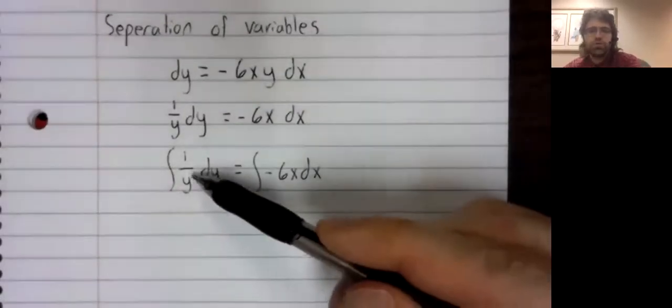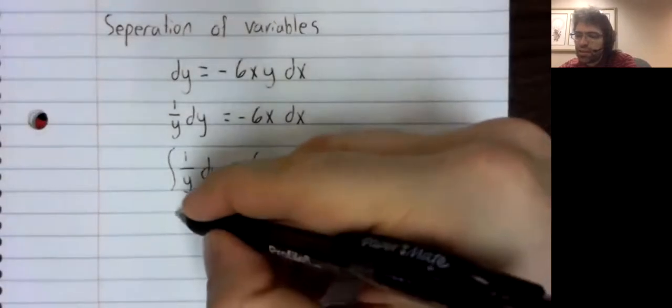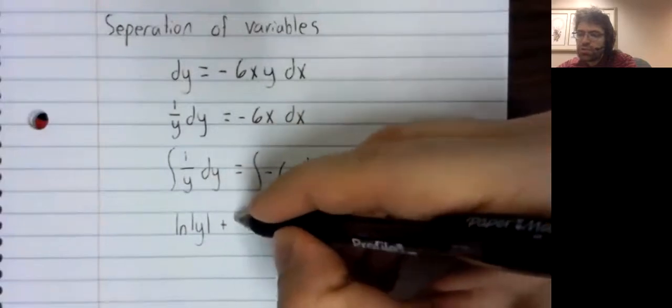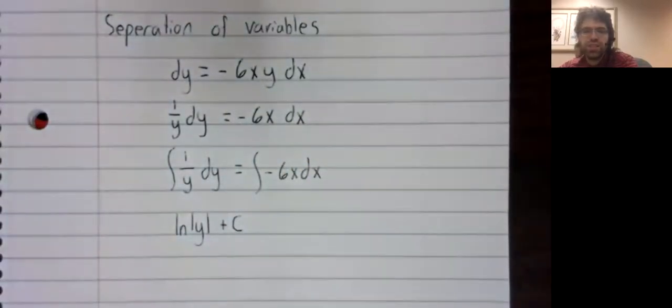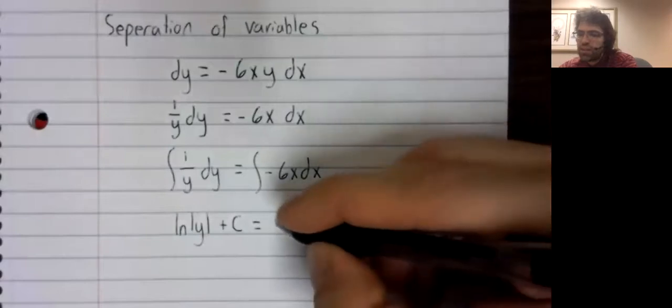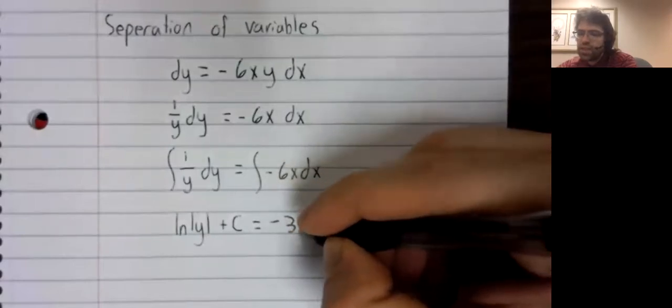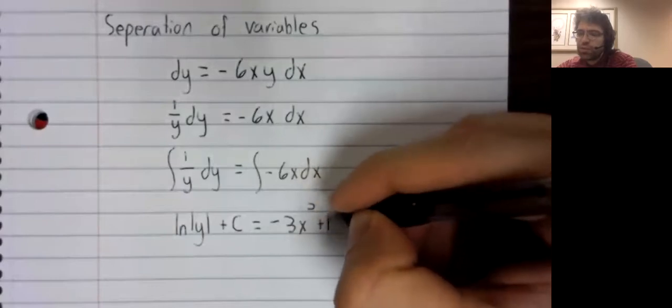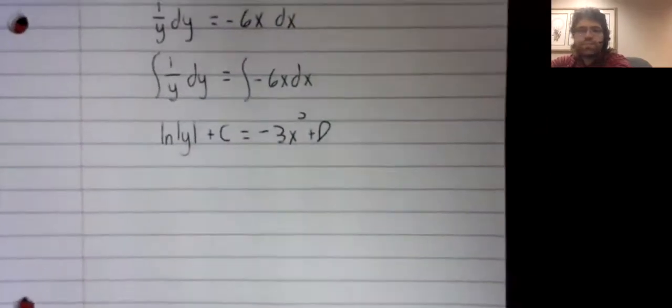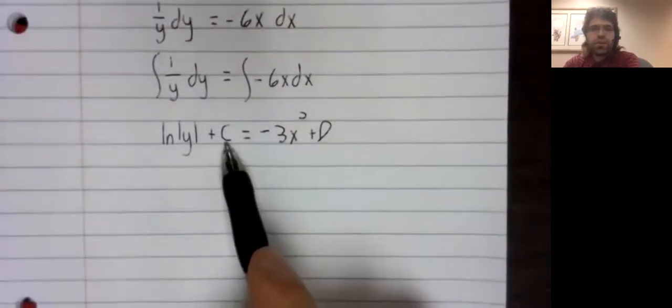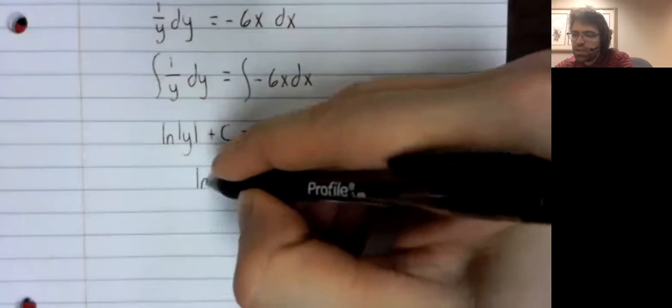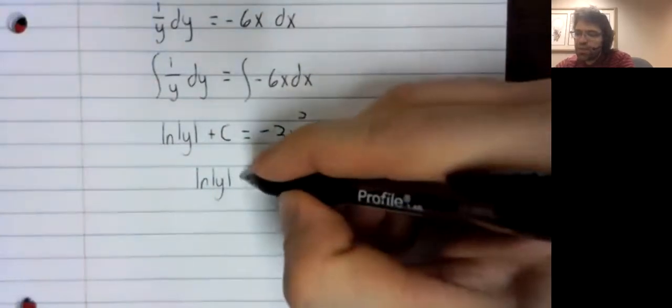This integral we can take. It's the natural log of the absolute value plus c. This integral we can take. It's negative 3x squared plus d. This constant of integration and this constant of integration can be combined together.